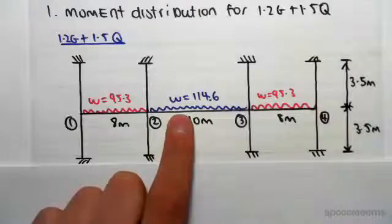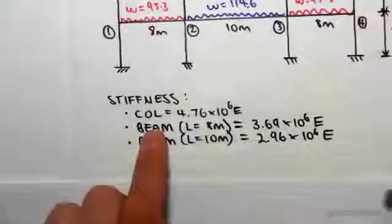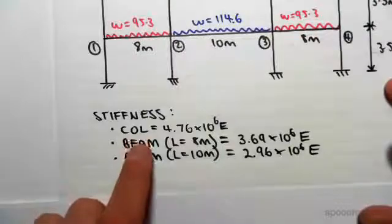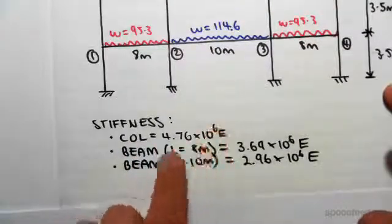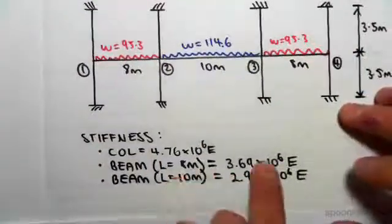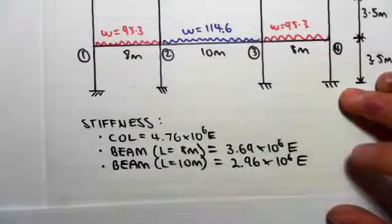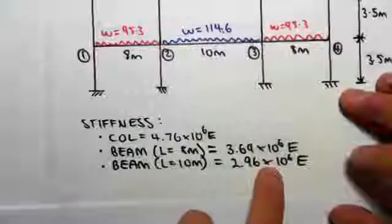The other piece of information we need are the stiffnesses for the column and the two beams. The column was 4.76 times 10 to the 6 with E, beam of that span, the 8 meter span, is 3.69 times 10 to the 6, and the beam with the 10 meter span in the center is 2.96 times 10 to the 6.